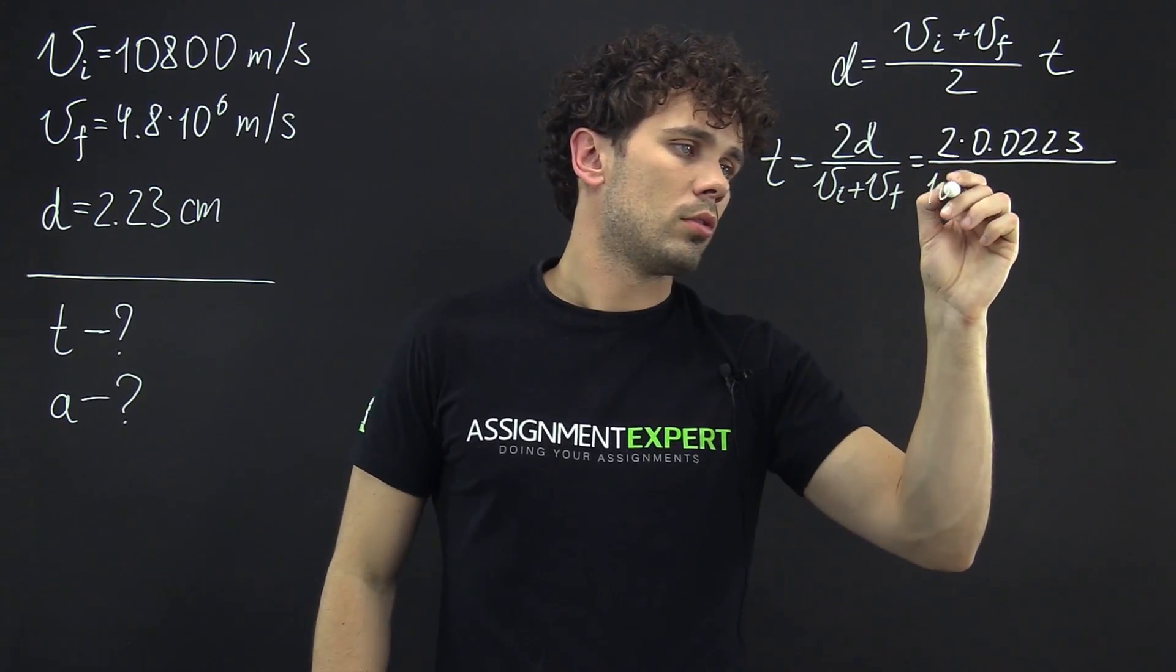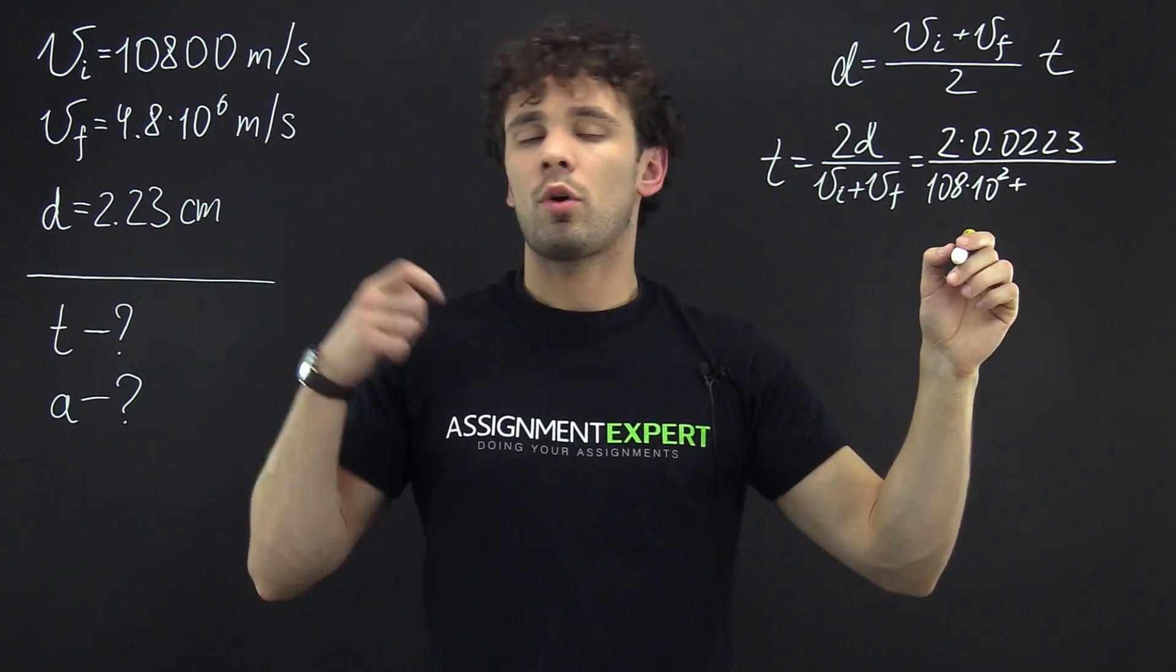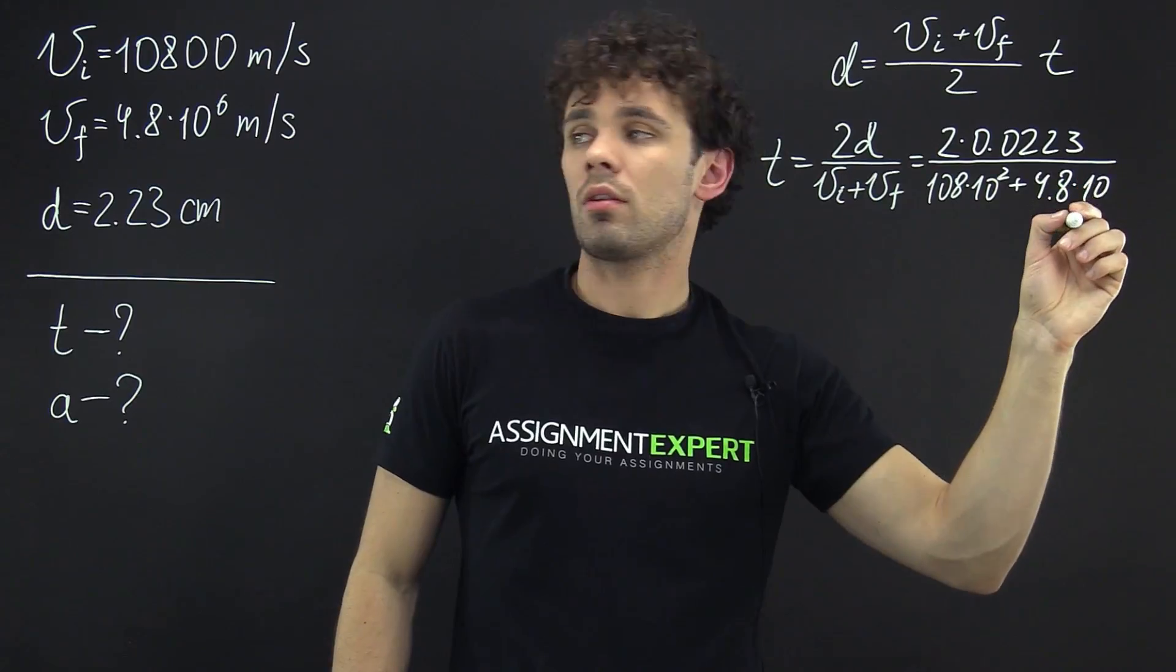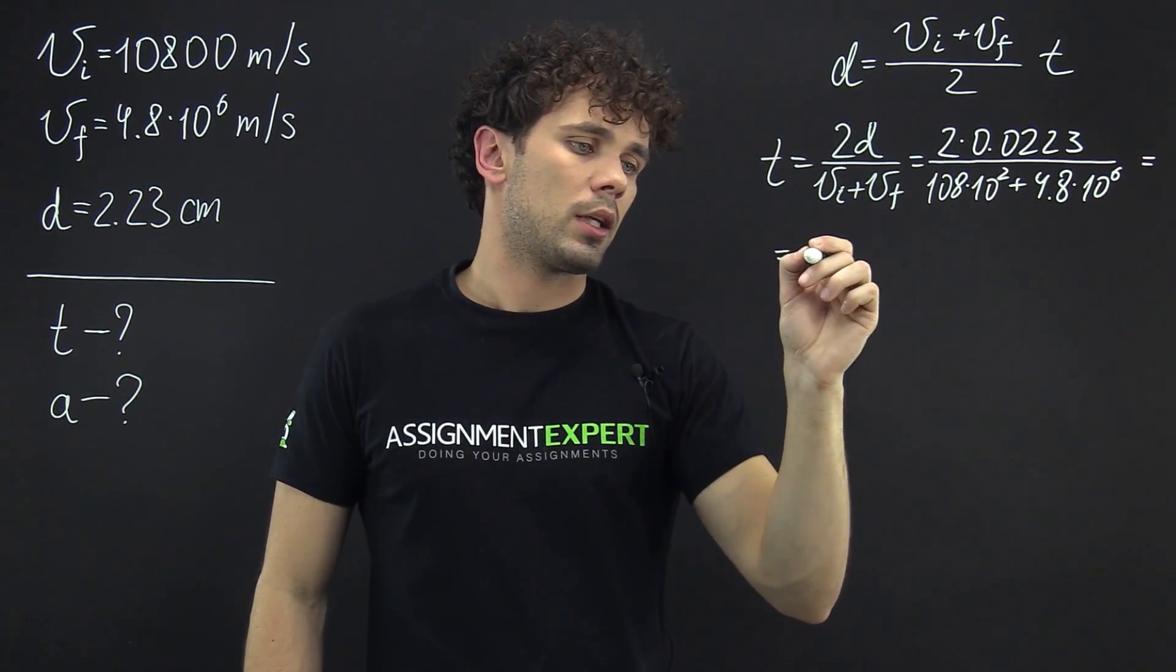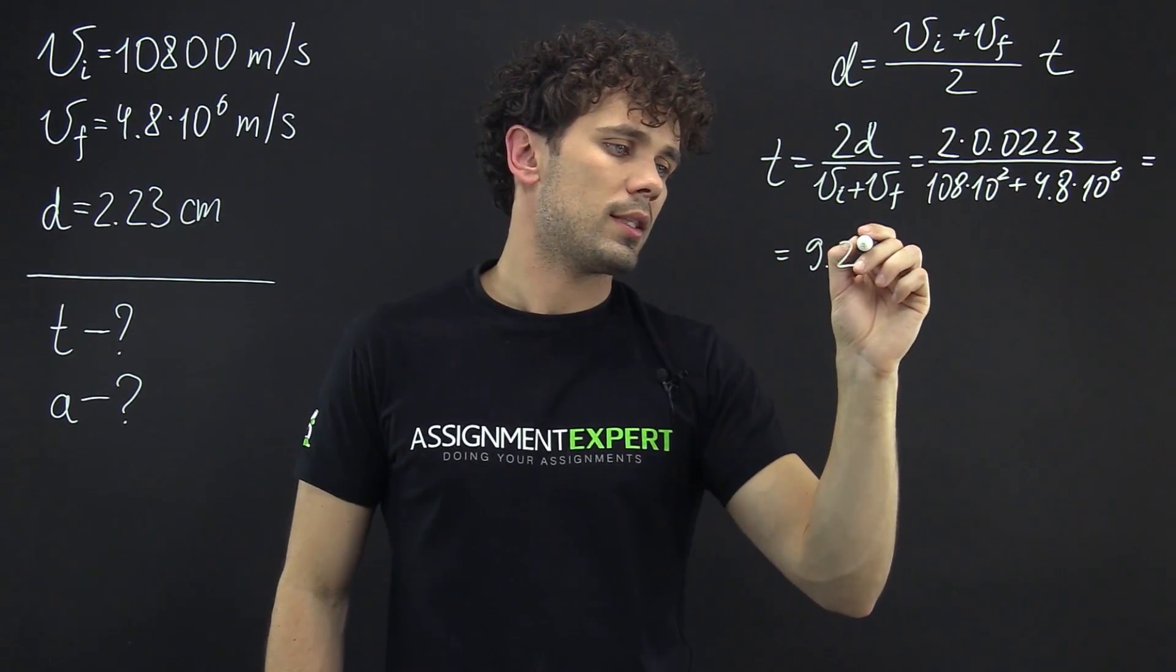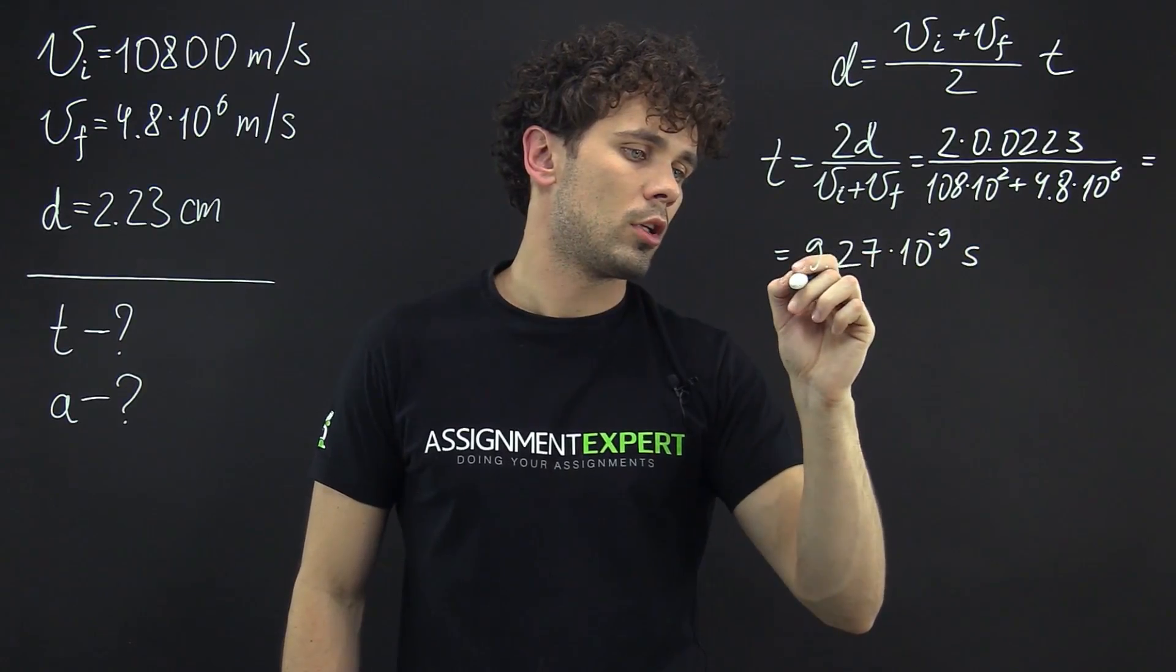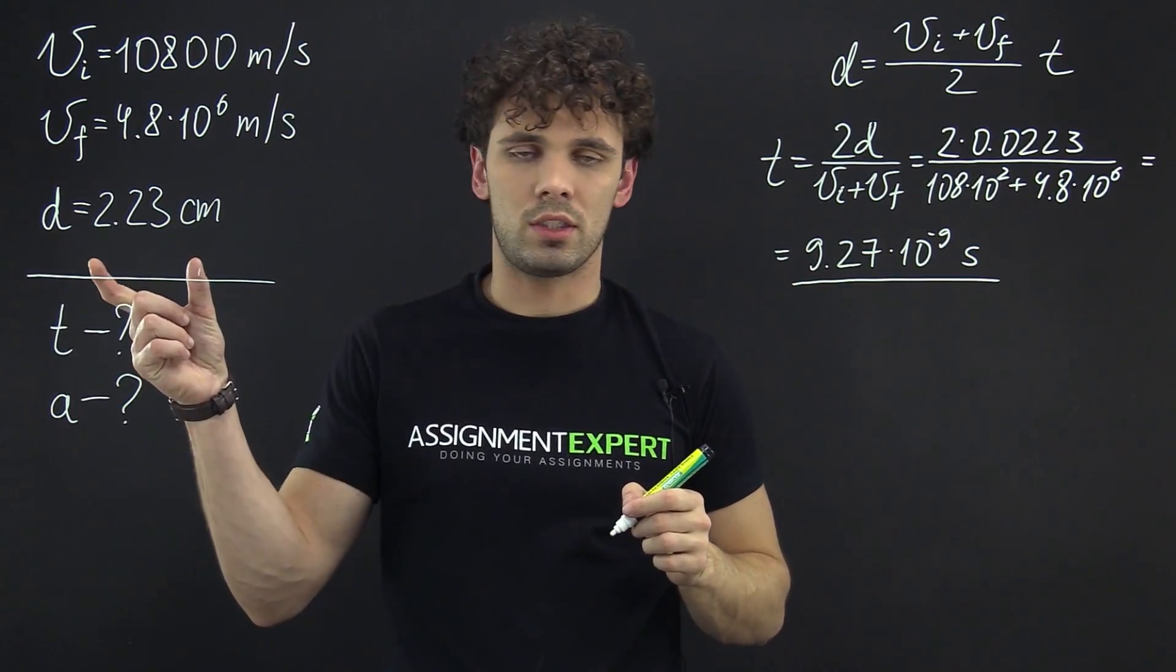108 times 10 raised to the second power and we get 9.27 times 10 raised to the negative 9th seconds. So here we found the time it takes our electron to travel this distance.